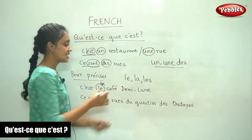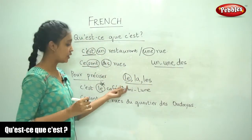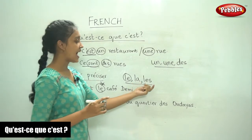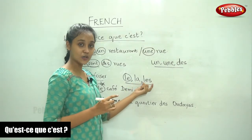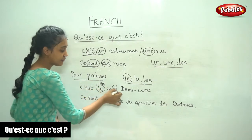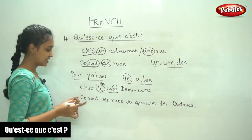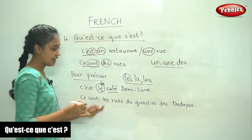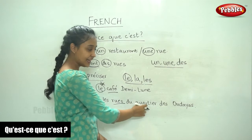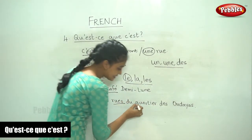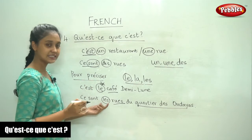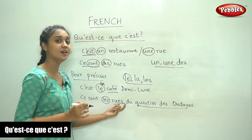Le comes before a noun that is masculine, la comes before a noun that is feminine, and les comes before nouns that are in the plural form. So 'C'est le café Demi-Lune' — café is the masculine form, so we use 'le.' And 'Ce sont les rues du quartier des Oudayas' — because the noun is in the plural form, we use 'les' and 'ce sont.'